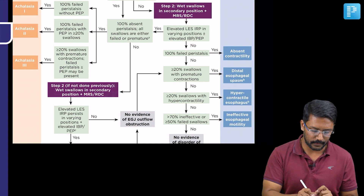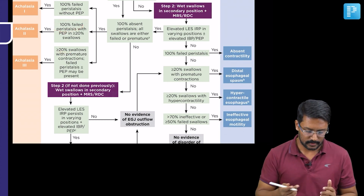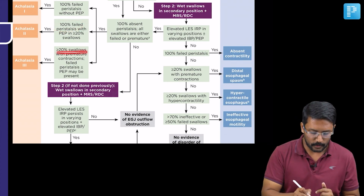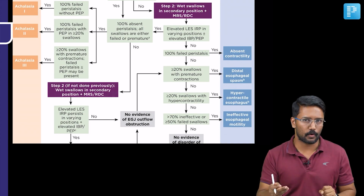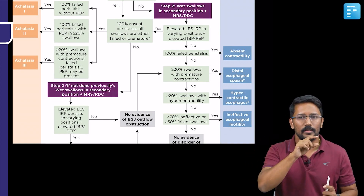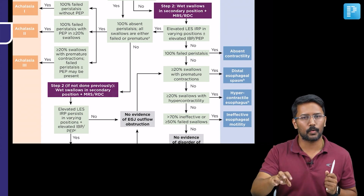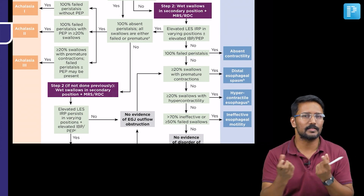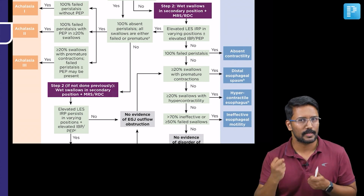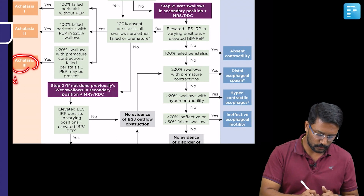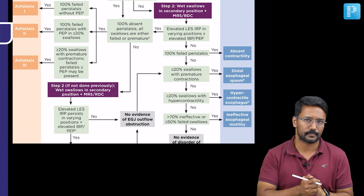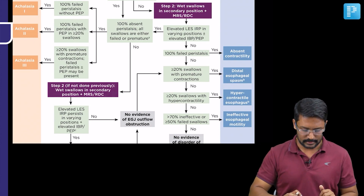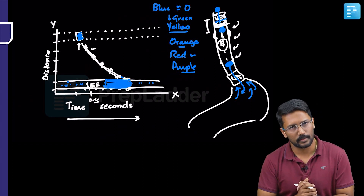Type 3 achalasia, also called vigorous achalasia cardia, has 100% failed peristalsis, but at least 20% or more of swallows show premature contractions — spasmodic contractions that are not true peristalsis and are not effective in pushing the bolus further down. To summarize: type 1 is classic achalasia, type 3 is vigorous achalasia. This is the classification of achalasia cardia based on high resolution manometry interpretation.